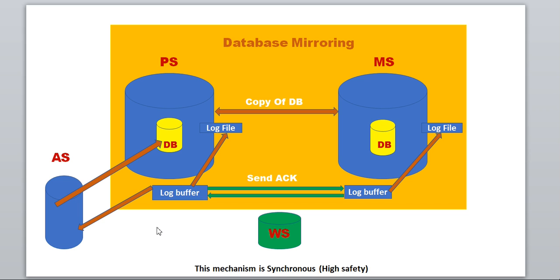This is how database mirroring works internally — getting the request from the application to the principal, and the logs moving from the principal to the mirror. To summarize: whenever the application server processes a request, the log buffer on the principal server writes a log to the log file and simultaneously sends a copy to the mirror server. The mirror's log buffer writes to its log file, sends back an ACK signal, and once the principal's log buffer receives it, it allows the application server to continue with further requests.